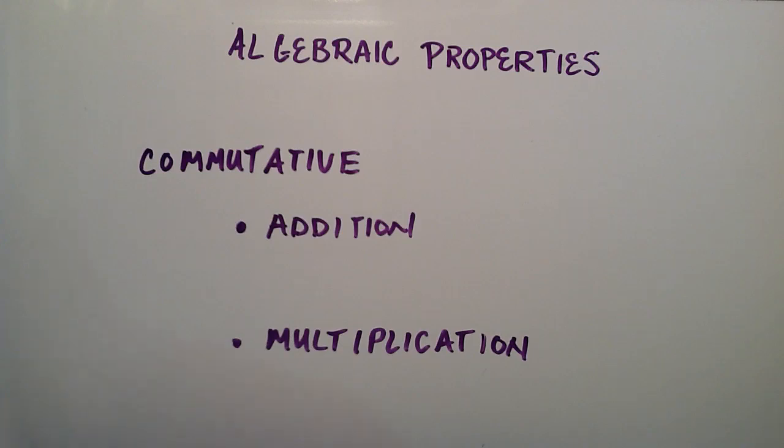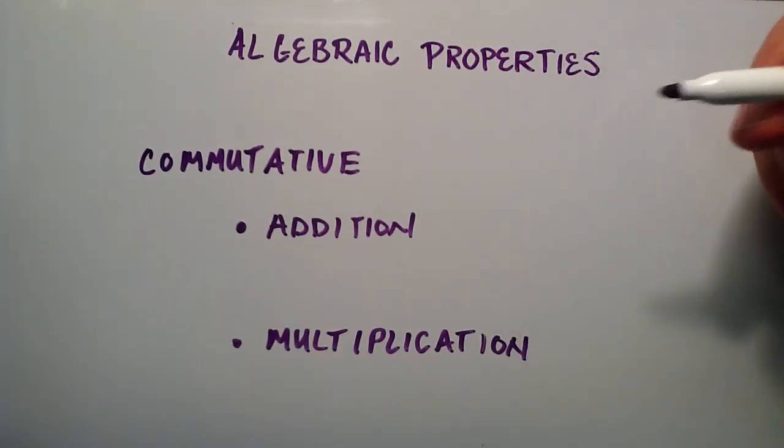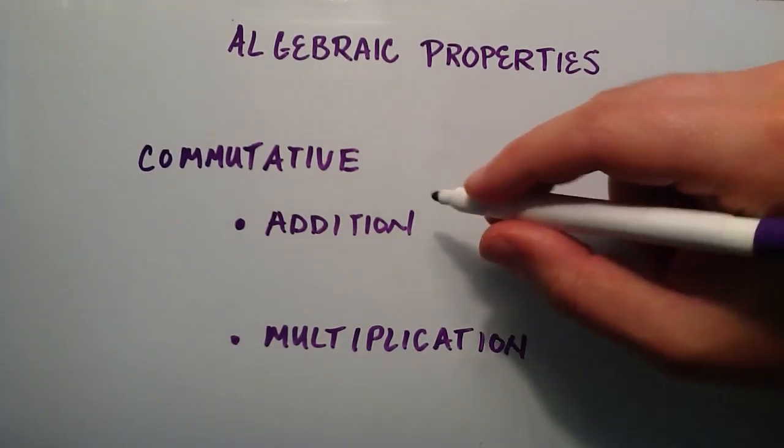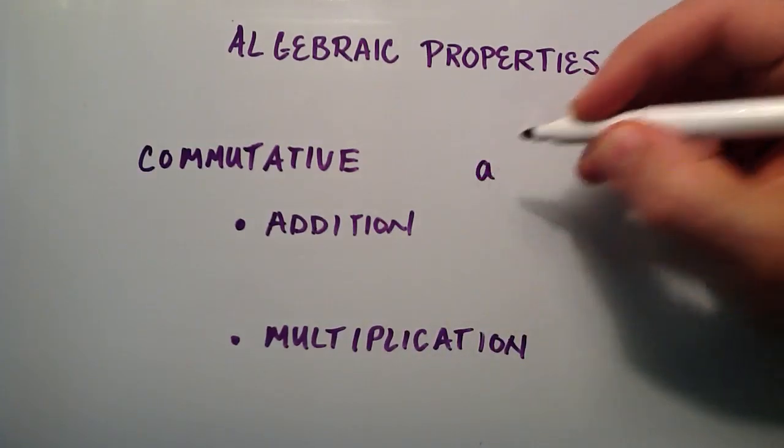The first algebraic property we're going to discuss is the commutative property. There's the commutative property of addition and the commutative property of multiplication. This comes from the root word commute, which means to move around. The commutative property says we can move the order of addition and multiplication. They can commute around.